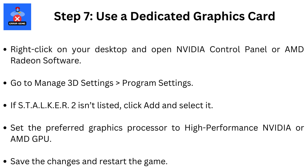Step 7: Use a Dedicated Graphics Card. Right-click on your desktop and open NVIDIA Control Panel or AMD Radeon Software. Go to Manage 3D Settings, then Program Settings. If STALKER 2 isn't listed, click Add and select it. Set the preferred graphics processor to high-performance NVIDIA or AMD GPU. Save the changes and restart the game.